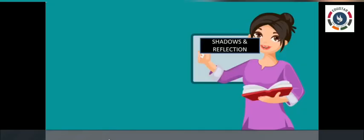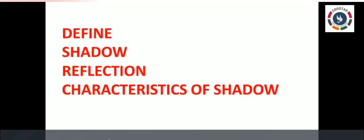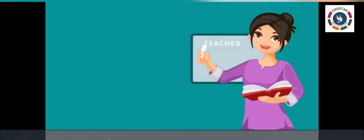Understood, children, about shadows, reflection, and how images in a plane mirror are different from a shadow. There are some activities given in your book — read and try to do the pinhole camera activity, which is explained clearly in your book. Write the definitions of shadow and reflection in your classwork note, and write about the characteristics of shadow.